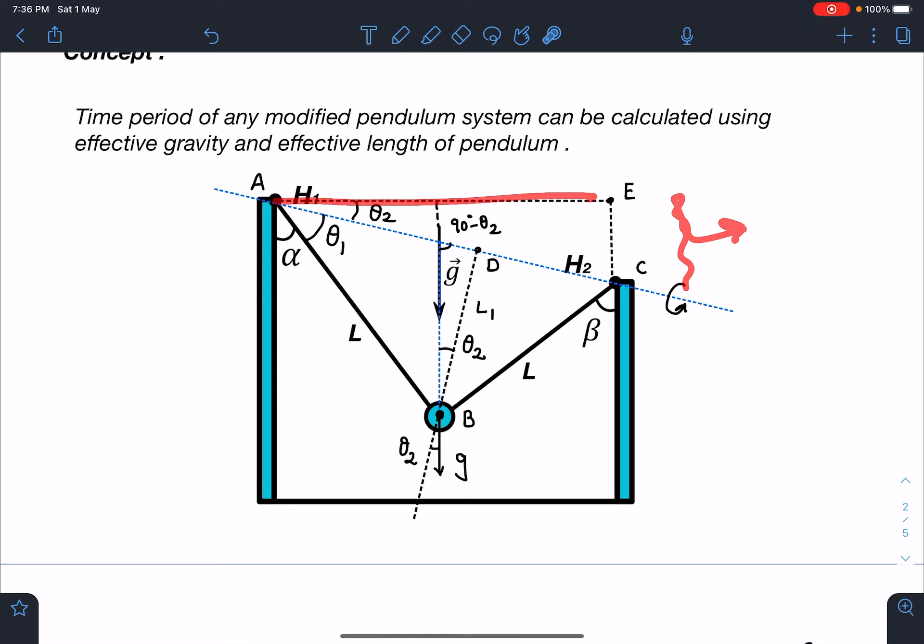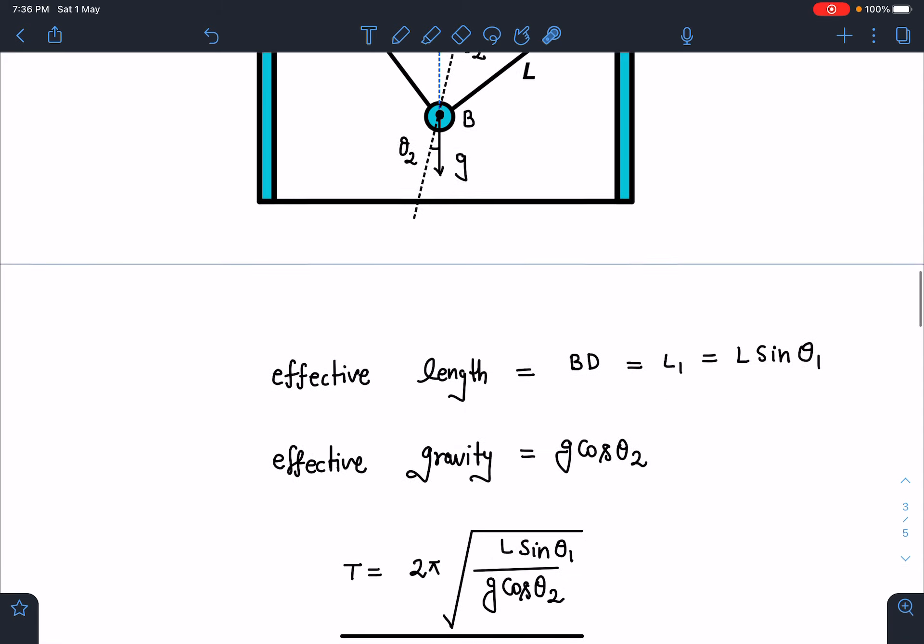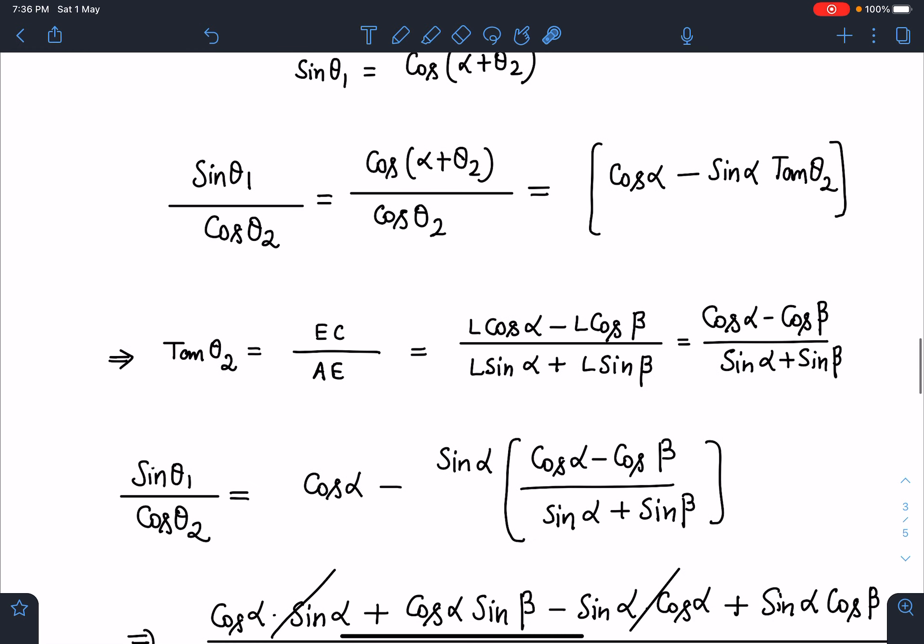Similarly, this distance I can add the sin components here. This will become L sin alpha plus L sin beta. So now I can write here that tan theta2 is L cos alpha minus L cos beta divided by L sin alpha plus L sin beta. I am going to get this value in terms of known quantities.